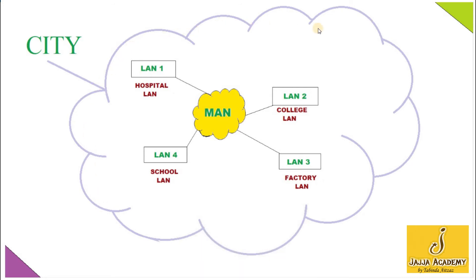In this diagram you can see a metropolitan area network which comprises a city. There are four local area networks: LAN 1 is the network inside a hospital located in the city; LAN 2 is the network of a college in the same city; LAN 3 is the network of a factory; and LAN 4 is the network of a local school in the same city. If we connect all four local area networks together, it makes a metropolitan area network — because this network covers the whole city.